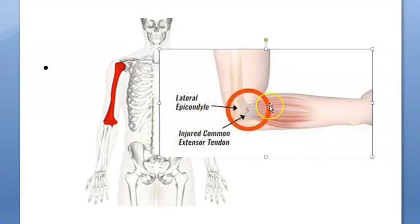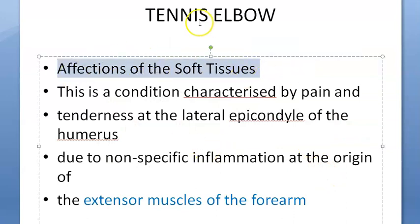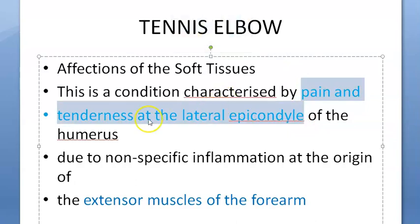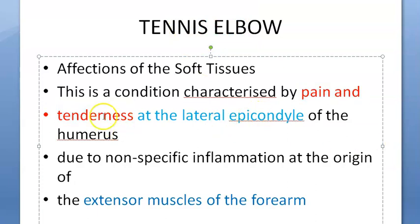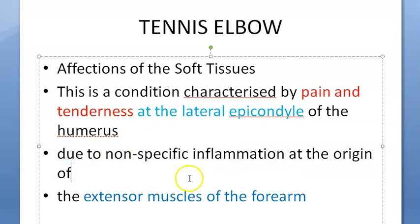At the lateral epicondyle, an extensor tendon is attached, and it is this tendon that is injured or affected. Essentially, this is an affection of the soft tissue. There is pain and tenderness at the lateral epicondyle.